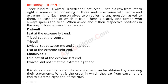Three pundits sit in a row from left to right in some order, consisting of three seats: extreme left, center, and extreme right. Each person gives two replies to any question, at least one of which is true. There is exactly one person who always speaks the truth — that is, one person who will say both statements as true.